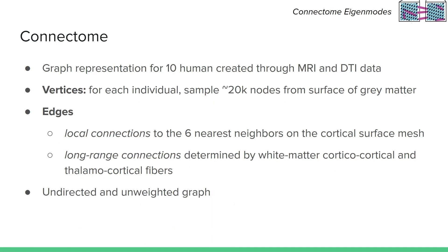For the connectome eigenmodes paper, a graph representation for 10 human connectomes was created through MRI and DTI data. For the vertices, about 20,000 nodes were sampled from the surface of gray matter for each individual. For the edges, two things were taken into consideration: one, local connections to the six nearest neighbors on the cortical surface mesh, and two, long-range connections determined by white matter cortical and thalamocortical fibers. The graph representation is undirected and unweighted, which means all entries of the adjacency matrix will be either 0 or 1, and the adjacency matrix will be symmetric.